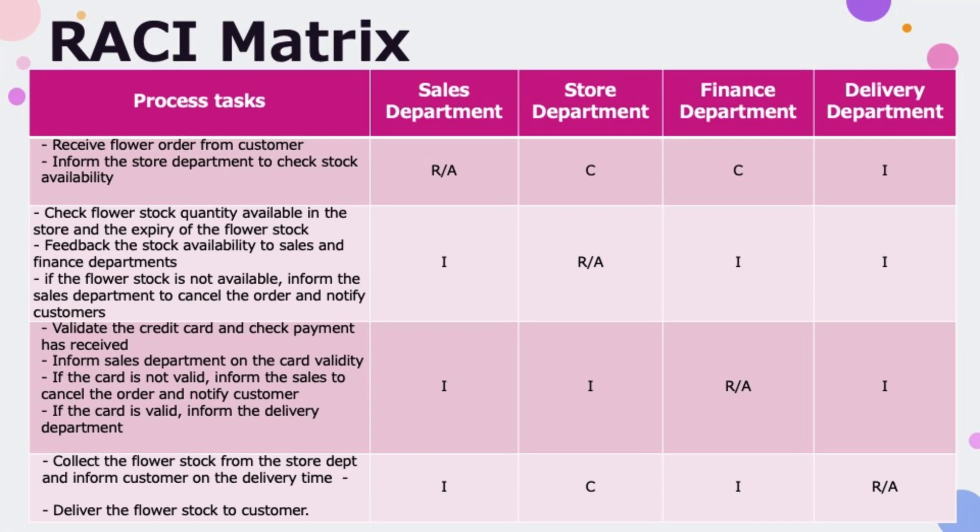So in this RACI matrix, we have only one party that is accountable and responsible in each task. We also minimize the number of stakeholders to be consulted to reduce time wastage, and keep all parties informed at all times.